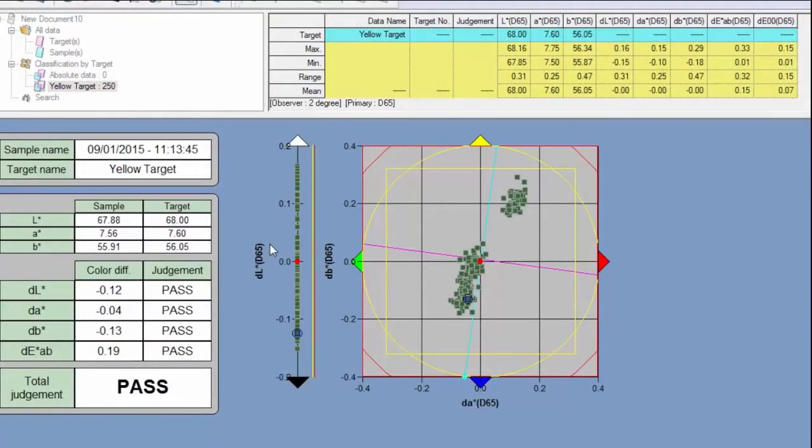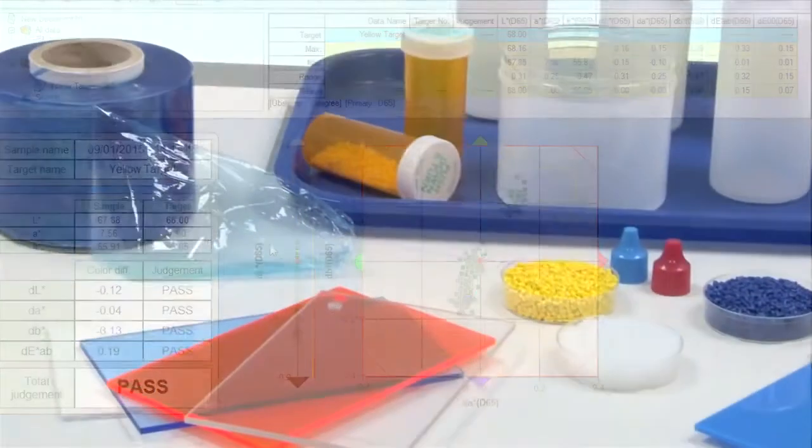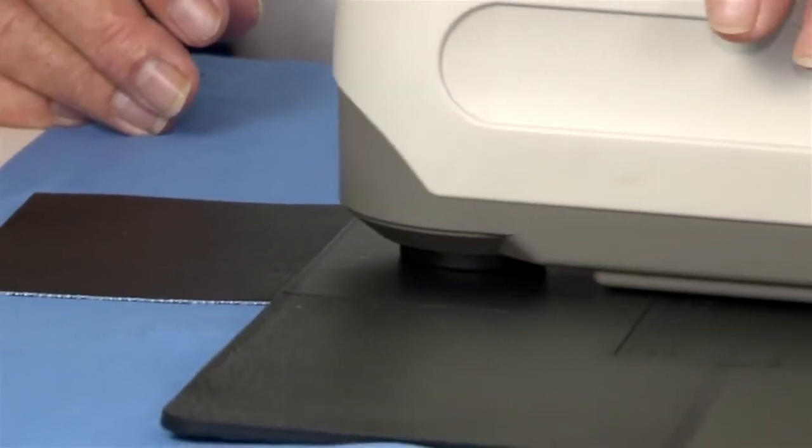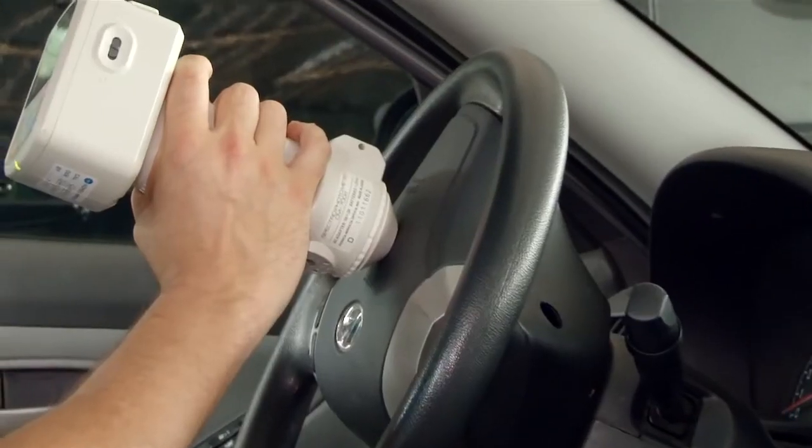With SpectraMagic NX software you can perform comprehensive color inspection, analysis of incoming raw materials, in-process production and outbound color critical goods and materials in virtually any industry.